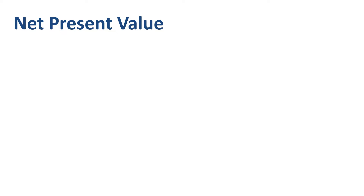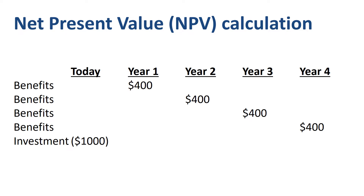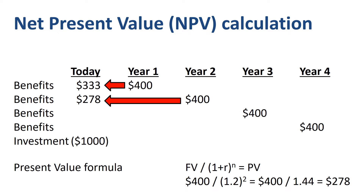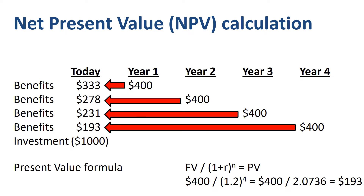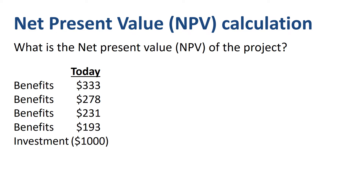In a calculation of net present value, we take future values and convert them one by one to present values, using a discount rate or weighted average cost of capital, which in this example is set at 20%. The further out in the future the nominal amount, the lower the present value equivalent. To get to NPV, you simply sum the present value amounts. The net present value in this example is $35.